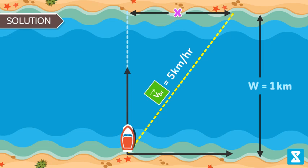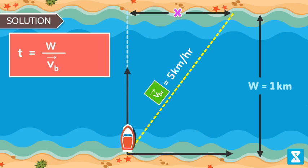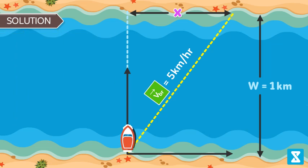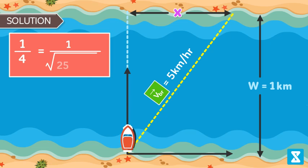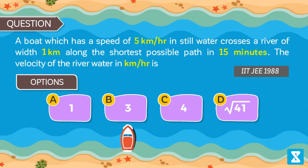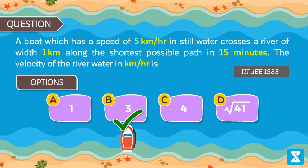As learnt earlier, minimum time is equal to W divided by velocity of boat, which is equal to W divided by square root of VBR square minus VR square. Therefore, 1 by 4 equal to 1 by square root of 25 minus VR square. Solving this equation, we get velocity of river equal to 3 km per hour. Hence option B is correct.